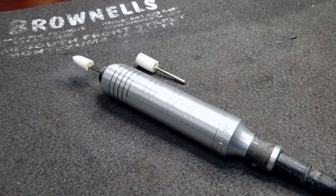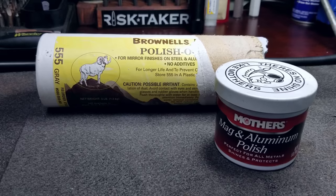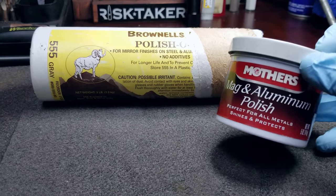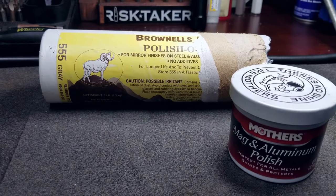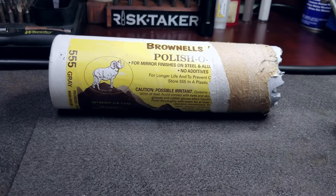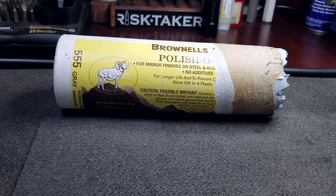We'll be using these little felt bobs in order to polish up your barrel's feed ramp. We will also be using some sort of metal polish. You can use Flitz, you can use Mother's Mag and Aluminum Polish, or you can use Brownells Polishing Array 555.